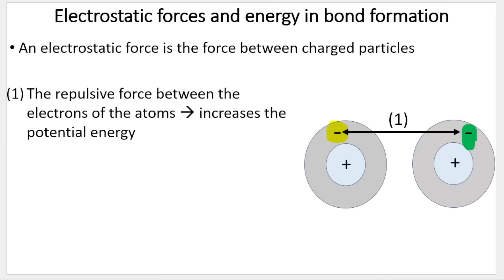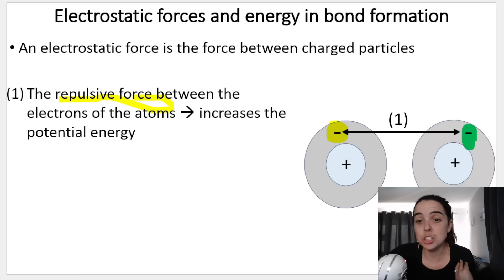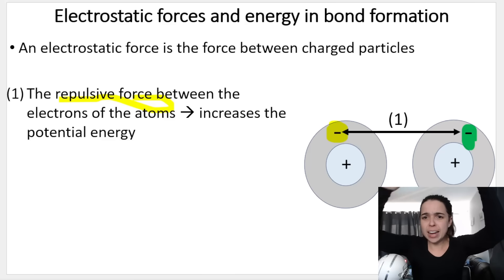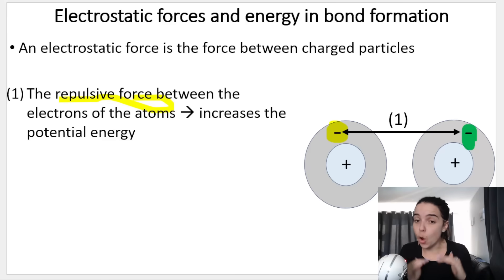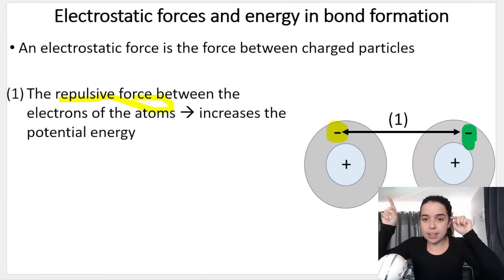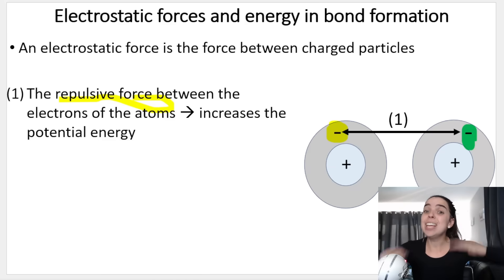That is basically what causes the electrostatic force that holds those atoms together. This is how the energy changes when the bond is formed. We have the negative electrons of one atom and the negative electrons of the other atom - like charges repel. Repulsive forces between the electrons of the atoms increase the potential energy. If we increase potential energy, things are not very stable. High energy means not very stable.